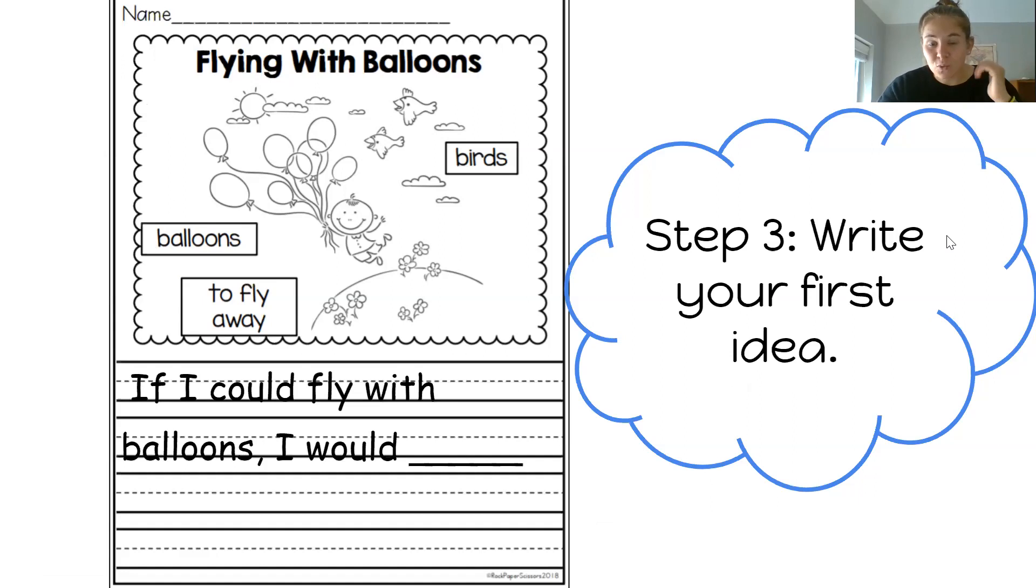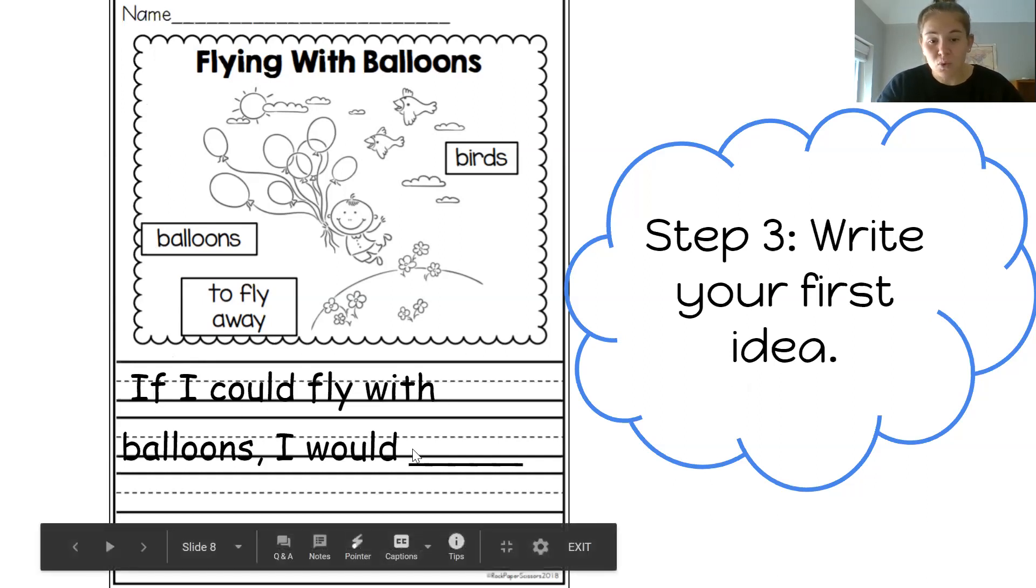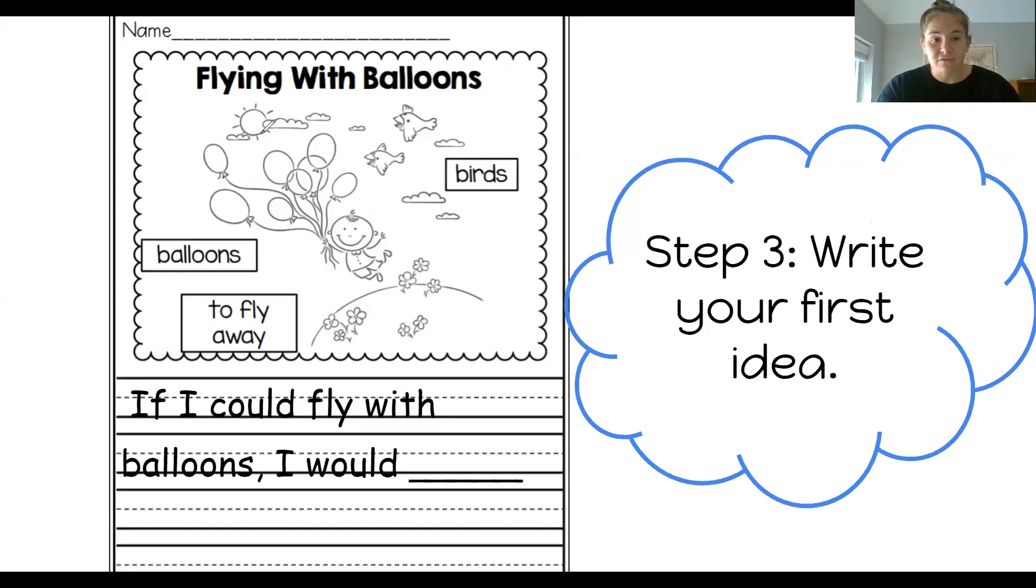And now step three is to write down your idea. So we already have our sentence started. So far, the sentence says, if I could fly with balloons, I would. Okay, so now I'm going to finish the rest of that sentence for my story. So my idea is race a bird. So my job is to tap it out and write down that idea.